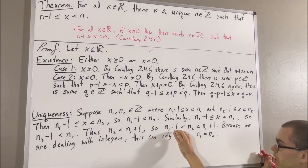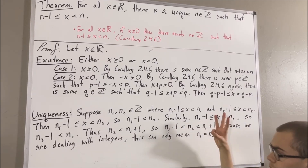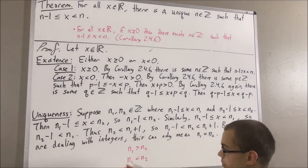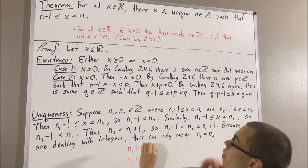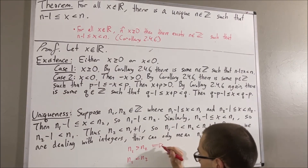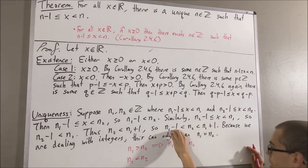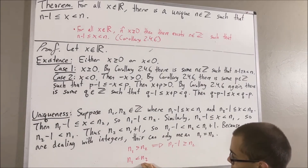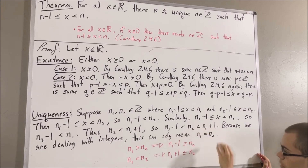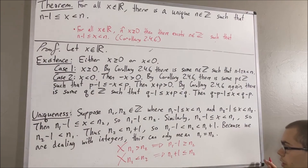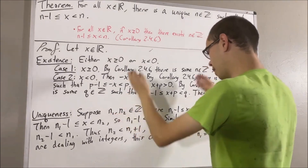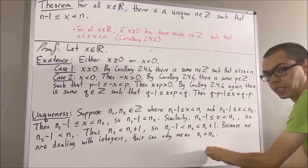To spell out more detail, the reason this implies n1 equals n2 is that we have three possibilities: either n1 equals n2, n1 is greater than n2, or n1 is less than n2. If n1 is greater than n2, then because they are integers, this is equivalent to saying n1 minus 1 is greater than or equal to n2 — but this contradicts the fact that n1 minus 1 is less than n2. Similarly, n1 less than n2 implies n1 plus 1 is less than or equal to n2, which contradicts n2 being less than n1 plus 1. So the only possibility is n1 equals n2, completing the uniqueness proof.